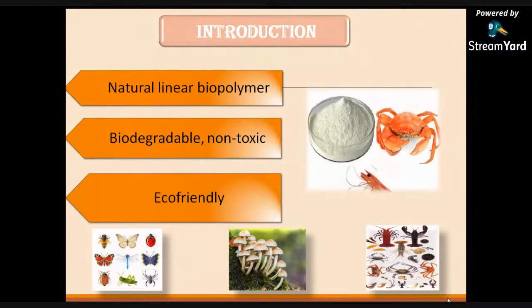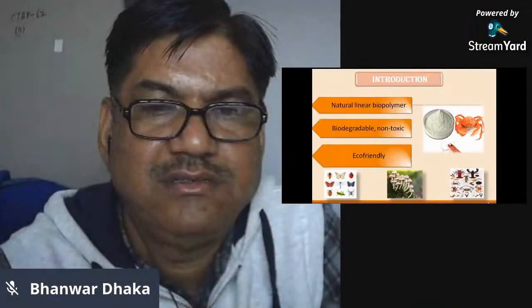What exactly does Chitin and Chitosan stand for? Chitin is one of the most important components of a bacterial cell wall, crustacean cells, and exoskeletons of insects. It is a natural linear biopolymer which is biodegradable, non-toxic, and eco-friendly in nature. It is one of the most abundant biopolymers after cellulose.